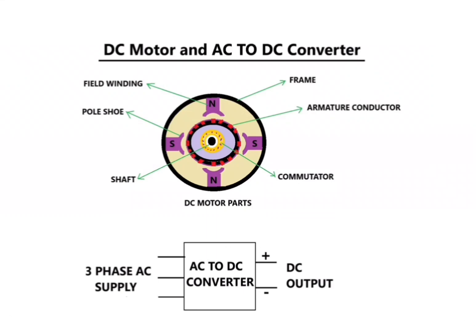DC motor and AC to DC converter diagram is given. For the DC motor, the main parts are: field winding, pole shoe, motor shaft, commutator, armature conductor, and motor frame. A block diagram is also given for the AC to DC converter.